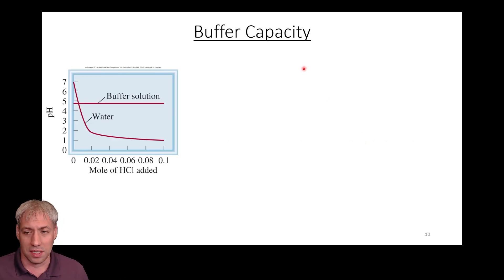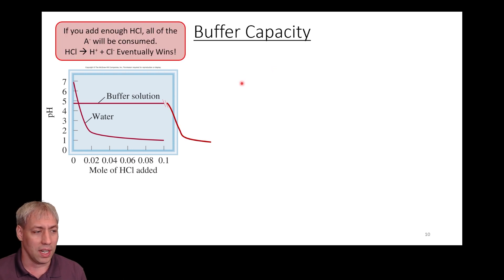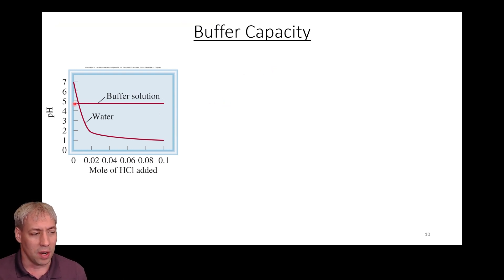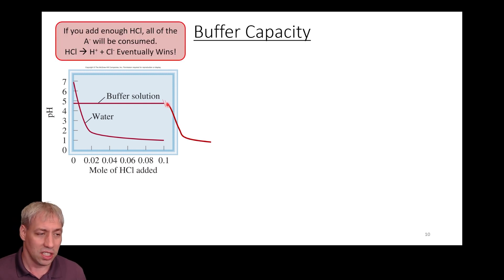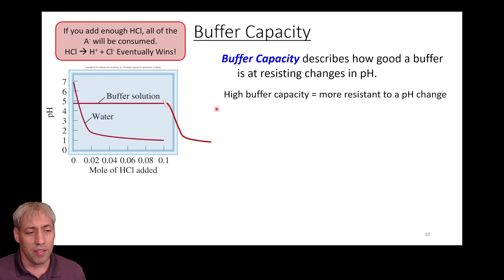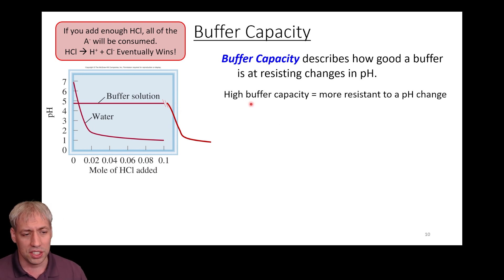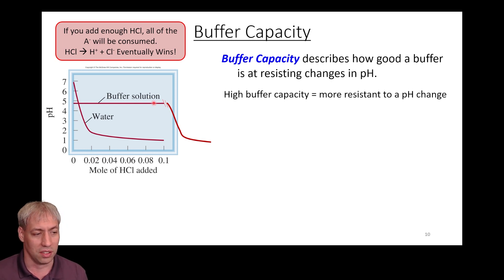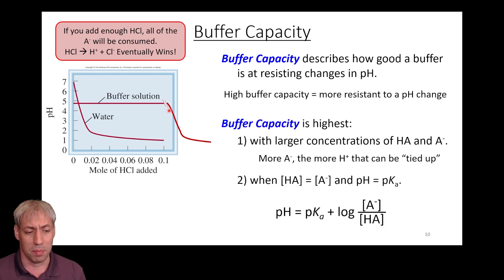Buffer capacity refers to how good the buffer is at resisting change in pH. If you add enough HCl, it will eventually chew up all the base and the pH will keep dropping toward 1. Buffer capacity describes how long the buffer can maintain its resistance to pH change — the higher the buffer capacity, the more it maintains that flat horizontal line on the pH graph for a larger added concentration.